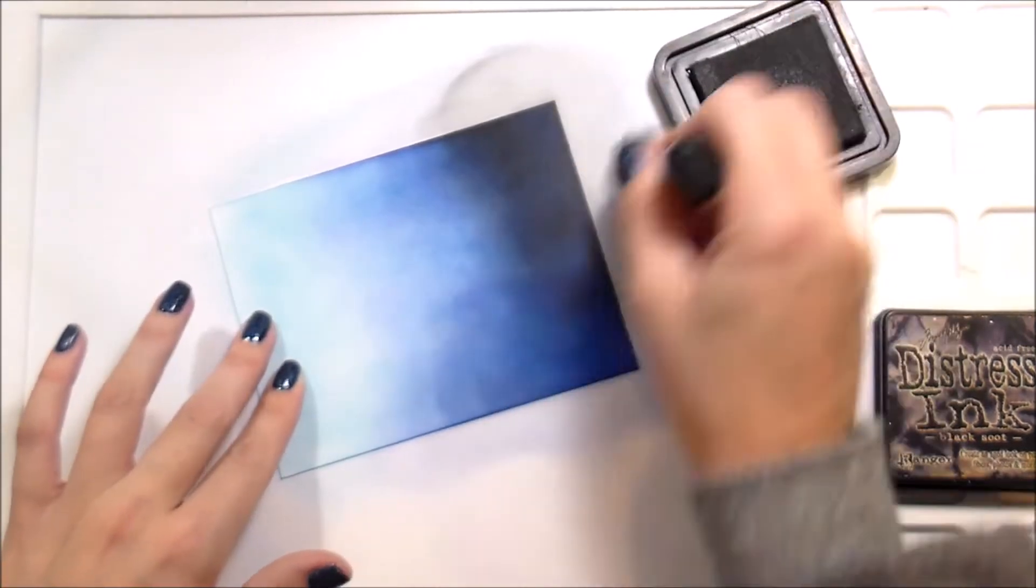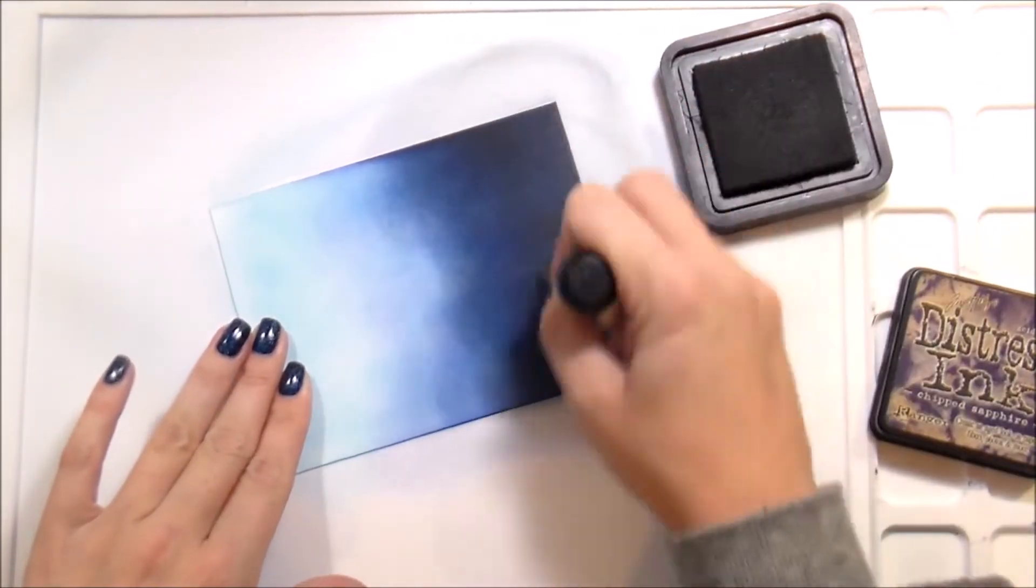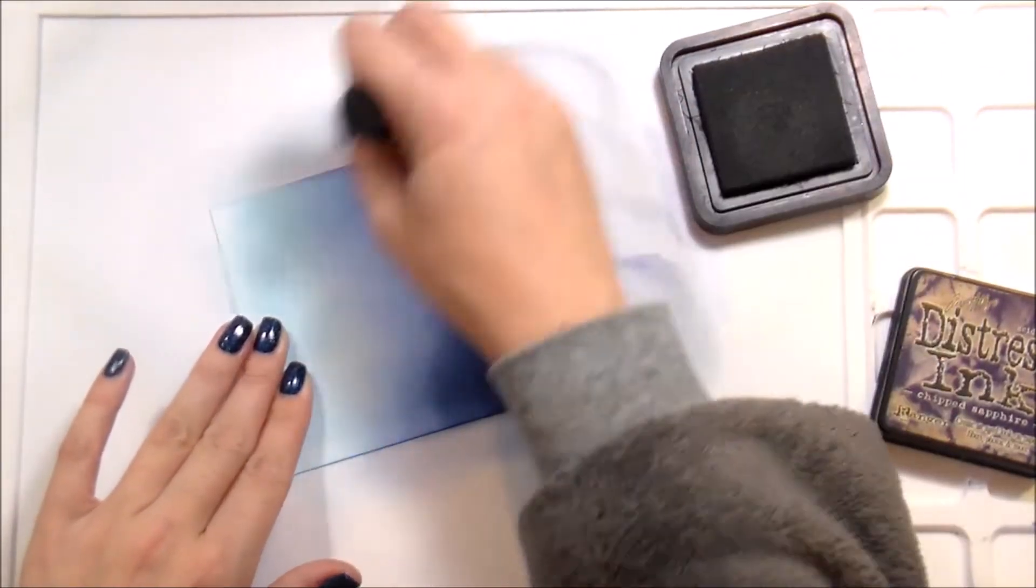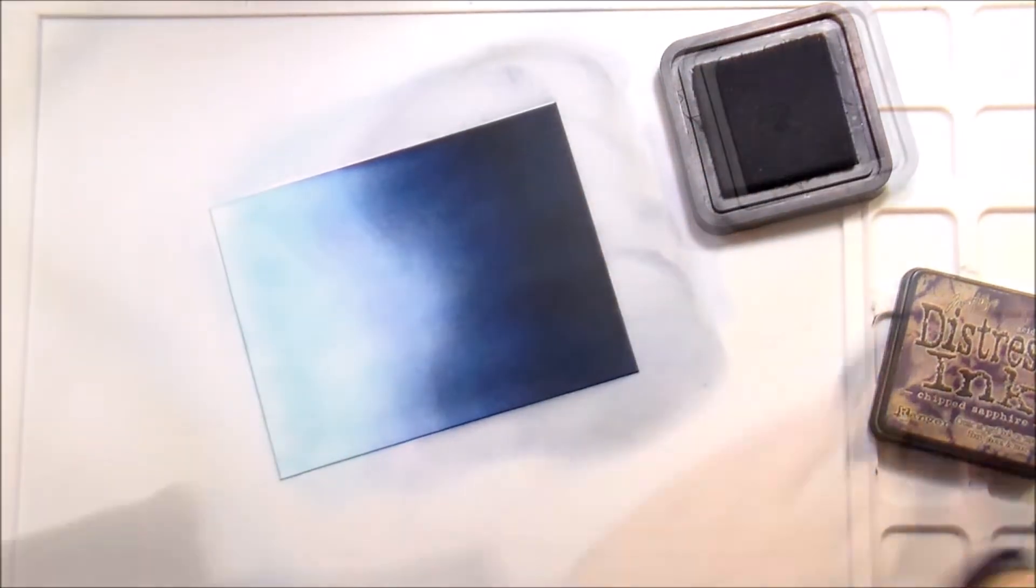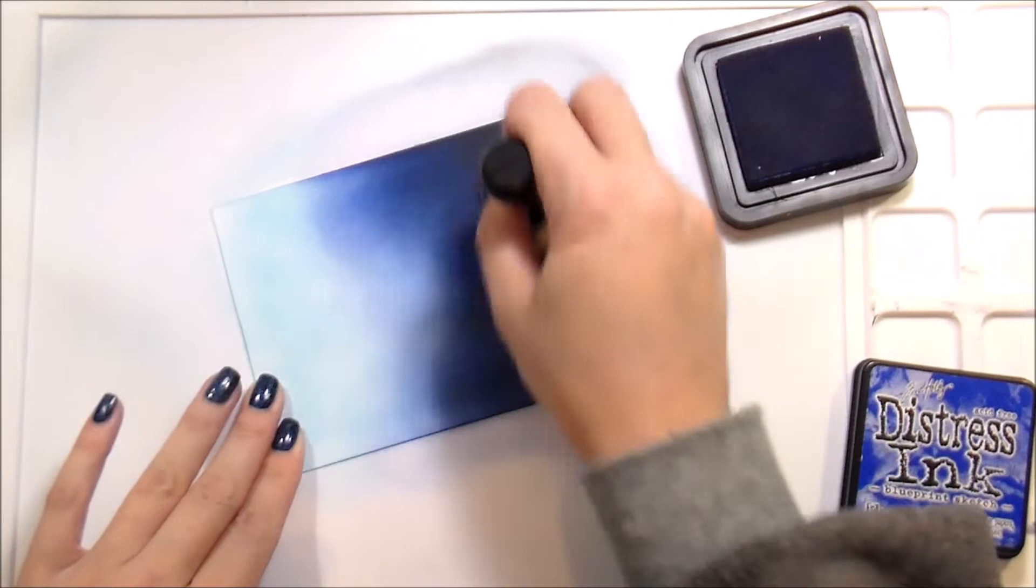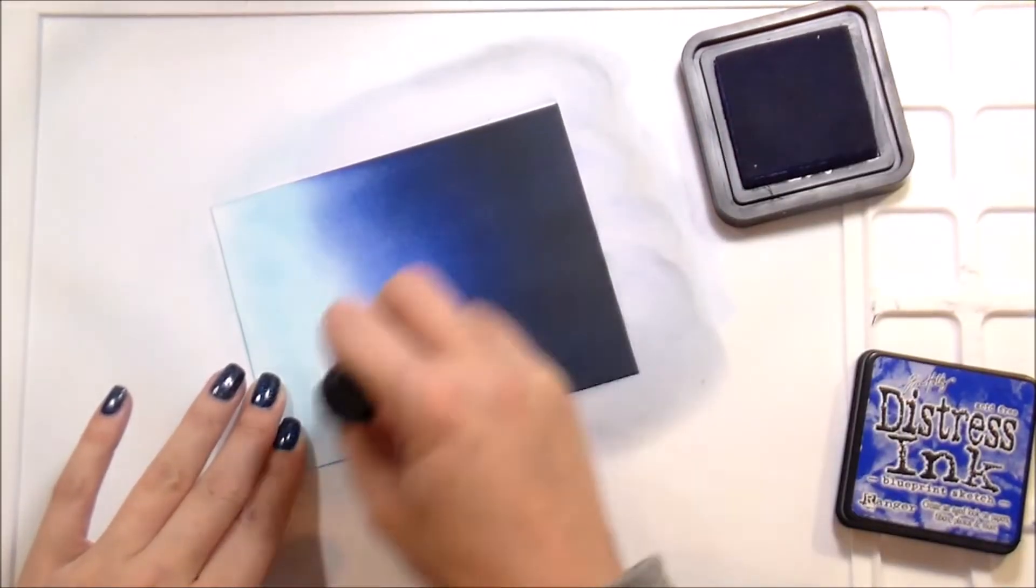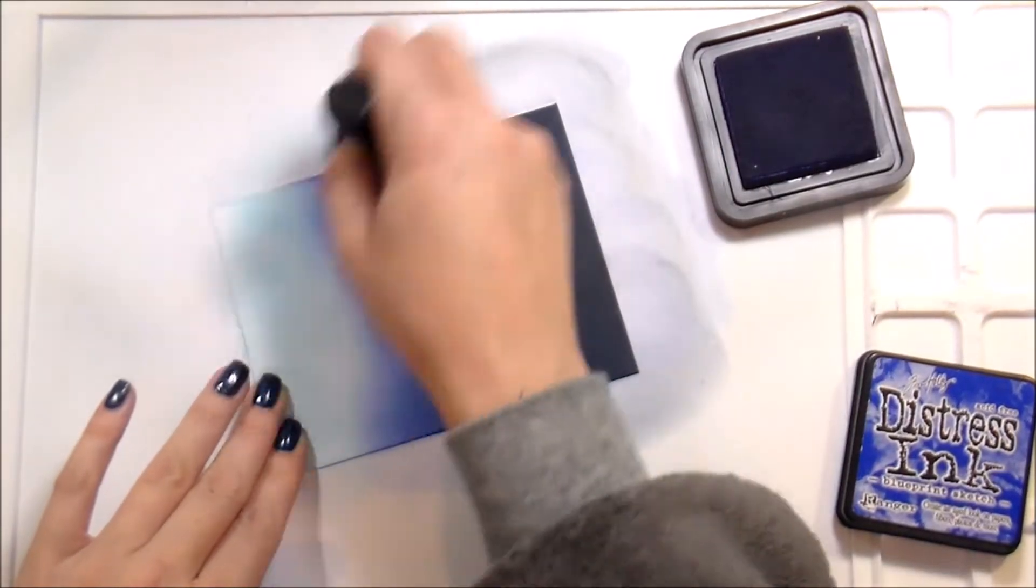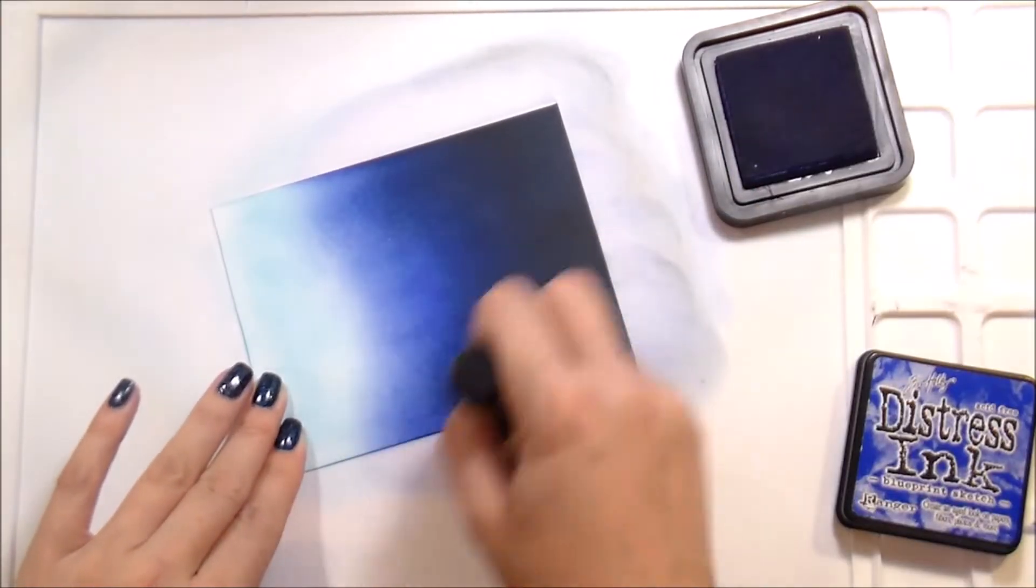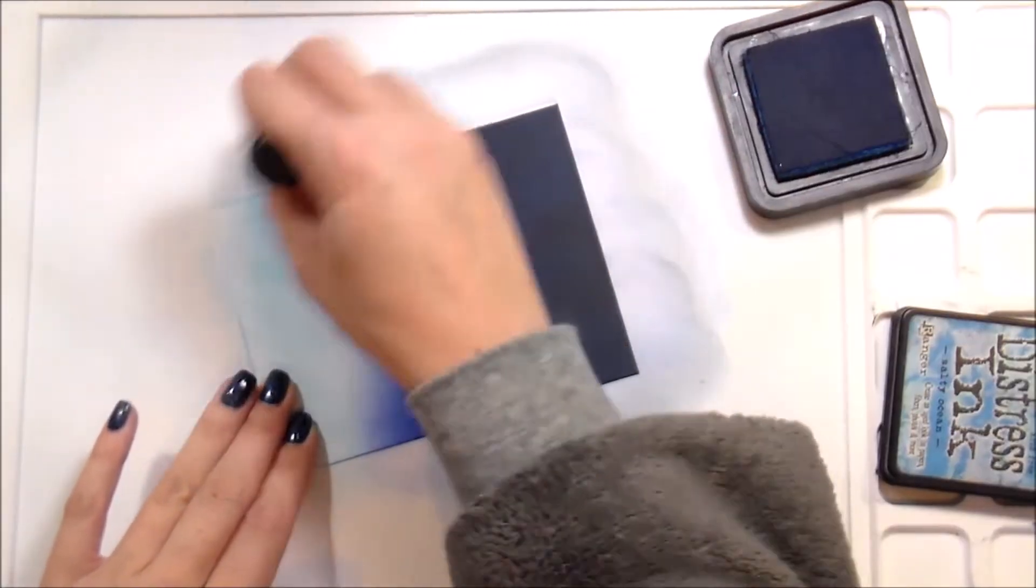Then going through to Blueprint Sketch, Chipped Sapphire, and Black Soot, just like I usually do when I'm doing a night sky. I just love them together. I love blue and I cannot deny it and I am not ashamed. I do this twice. I go from lightest to darkest, darkest to lightest. On my way back through for the second time blending them out, I'm going to speed up the ink blending a little bit.